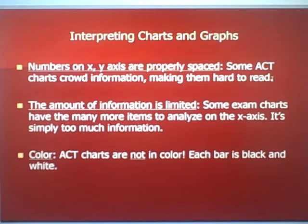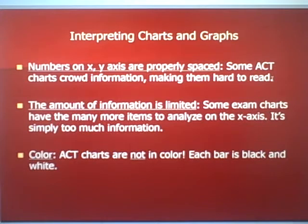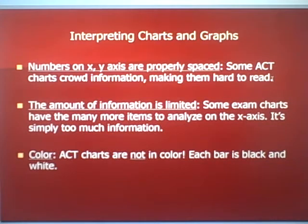We can see the numbers on both axes. Some ACT charts crowd information, making them hard to read. The amount of information here is limited — only about three or four pieces to look at. Some exam charts have so many more items on the x axis that it's hard to tell them apart; the information is pushed too close together. Another big problem is that ACT charts are not in color, so they use shading, hash marks, dots, and other black-and-white techniques — making the information hard to read.